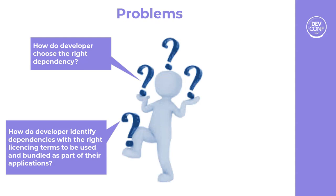The second problem comes with licensing terms. Every dependency in your stack has its own associated license. Are those licenses compatible with each other? Are there any restricted or outlier licenses? How does a developer know that?